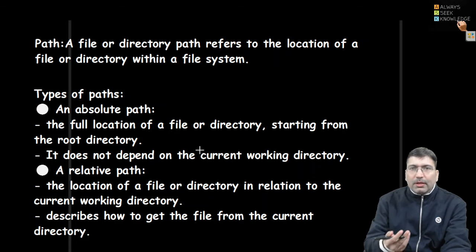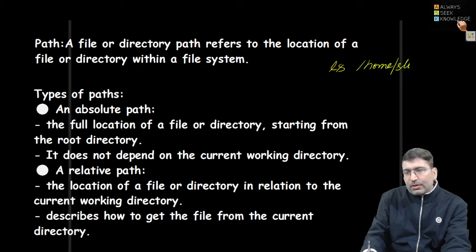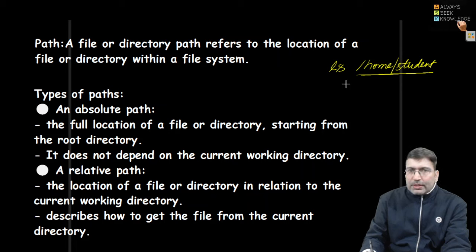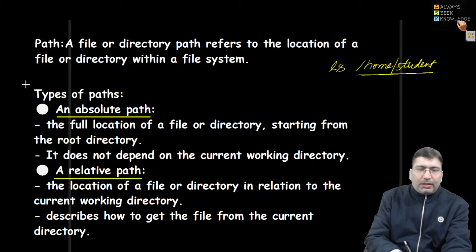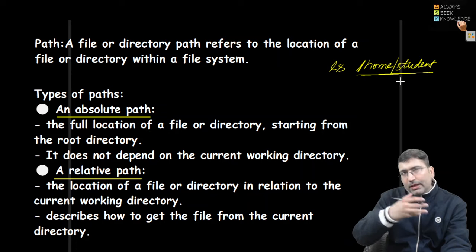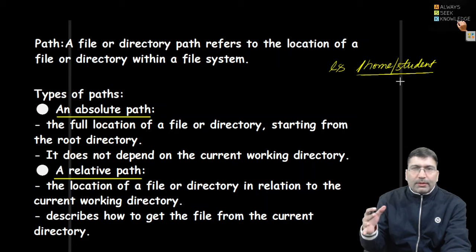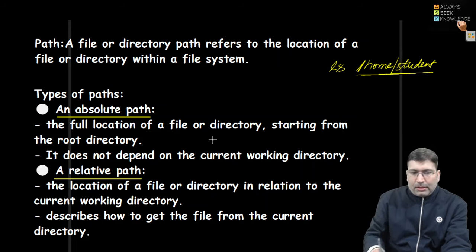Now let's discuss the different types of paths. When we try to locate a file in a machine we follow a path. For example if I run ls on a path: ls /home/student — that is the path. There are two ways to define a path. One is the absolute path. An absolute path starts with root, and all the directories in between up to the actual file are written in full — nothing is missing from root to the actual file in a hierarchical way.